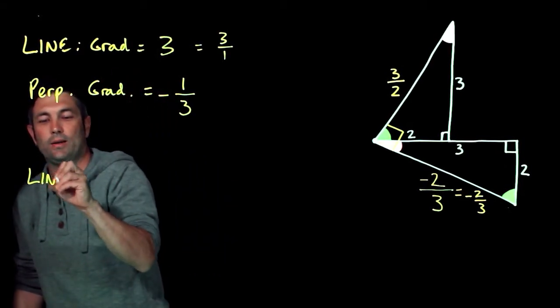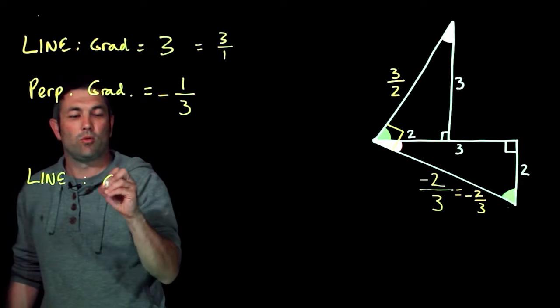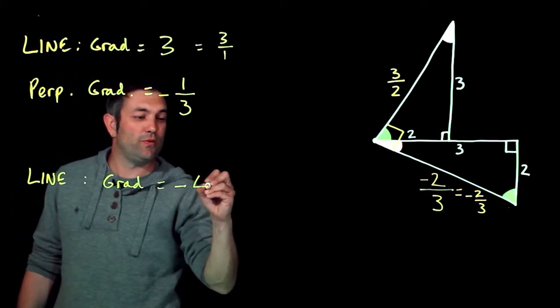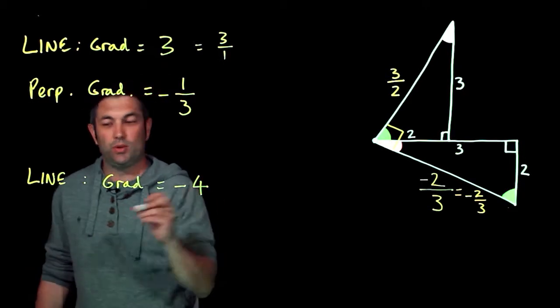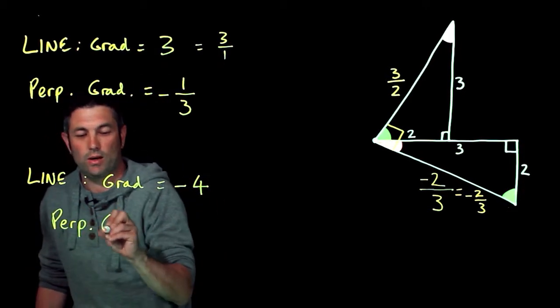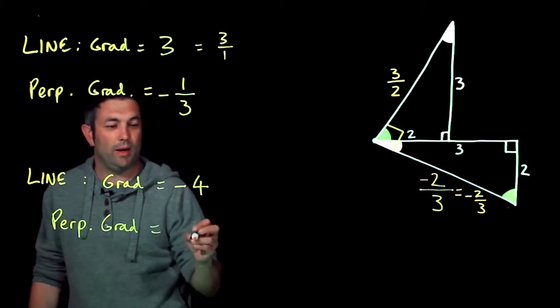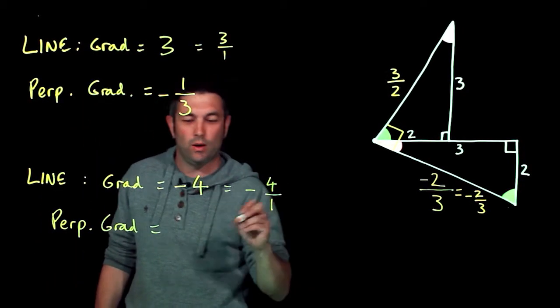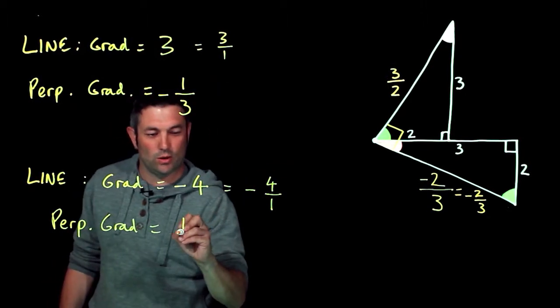Now the same sort of thing: if I had another line with a gradient of, what should we say, -4, the perpendicular gradient would be, well what's that as a fraction? Well it's -4/1. Turn the fraction upside down, a quarter...